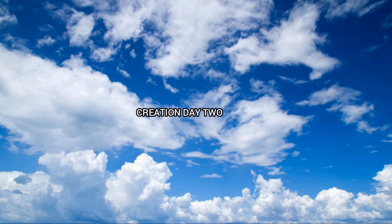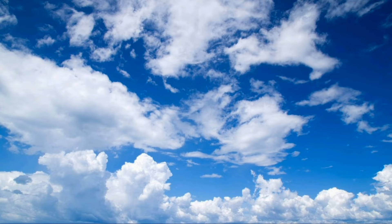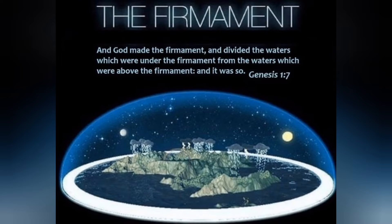Creation Day 2. Genesis chapter 1 verse 6 to 8. God creates the sky. The sky forms a barrier between water upon the surface and the moisture in the air. At this point earth would have an atmosphere.